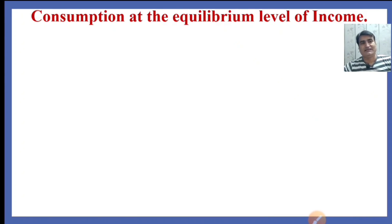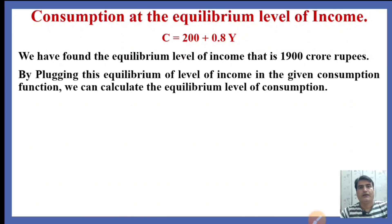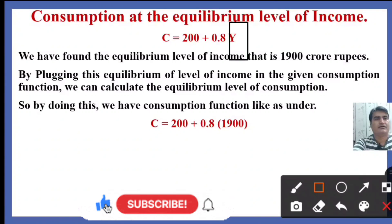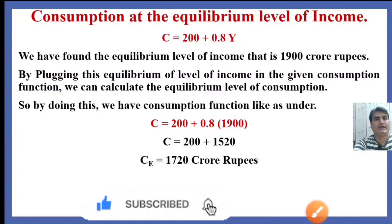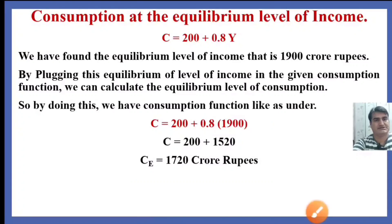What will be the consumption at this 1,900 crore rupees level of income? By plugging this equilibrium level of income into the given consumption function — 200 plus 0.8Y — and substituting Y equals 1,900, the consumption will be 1,720 crore rupees at the given level of income of 1,900 crore rupees.